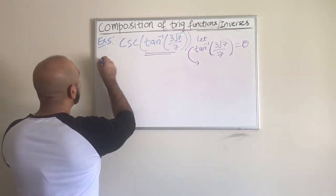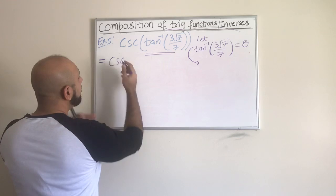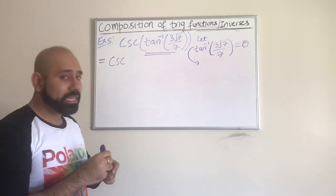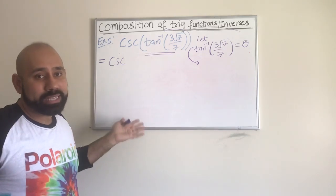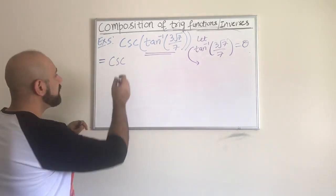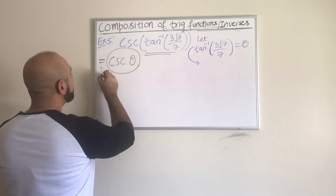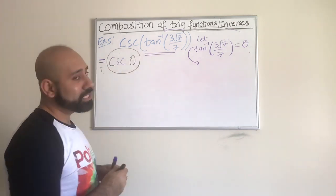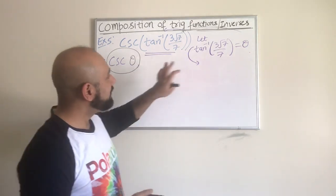If we start with that, then obviously we know that this composition just simply becomes cosecant of theta. That's the reason why we want to set this equal to some angle theta or some variable. Finally, our goal is to evaluate the cosecant of theta.